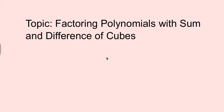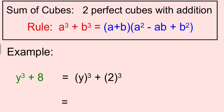We're going to now factor polynomials with sum and difference of cubes. This is new for you. Here's the rule when you have two perfect cubes with an addition symbol between them. How you factor it is what's written here in the blue. How it'll look is a perfect cube plus another perfect cube.